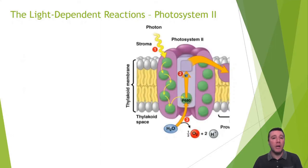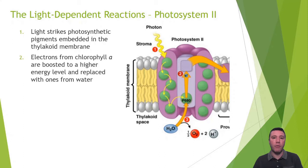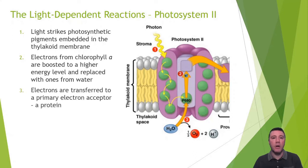Let's begin with the process of the light-dependent reactions. We begin with photosystem II. First, light strikes photosynthetic pigments embedded in the thylakoid membrane. The energy from light is transferred ultimately to a chlorophyll A at the reaction center of photosystem II. Electrons are removed from chlorophyll A as they are boosted to a higher energy level. The electrons are temporarily passed off to a protein called a primary electron acceptor. Water is split apart to replace chlorophyll A's lost electrons. In the process, protons and half of an oxygen molecule are liberated. Once a second water molecule is split, a complete diatomic oxygen molecule is formed.